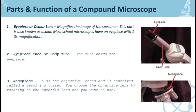Number three is the nose piece. As you can see in the image, it holds the objective lenses and is sometimes called the revolving turret. You can choose the objective lens by rotating to the specific lens you want to use. Ito yung pwede nating i-pihilitin para magpalit tayo ng iba't ibang uri ng lenses na pwede nating gamitin para makita ang isang organisms.